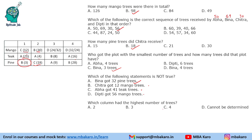Which column had the highest number of trees? Column 1 is not in the options. Column 2 total is 52. Column 3 has 17 + 17 = 34, plus either 24 or 32, giving 41 to 49. Column 4 minimum is 44 + 24 = 68 and maximum is 44 + 32 = 76. So regardless of the ambiguous value, column 4 always has the highest number of trees. That concludes the solution to this set.